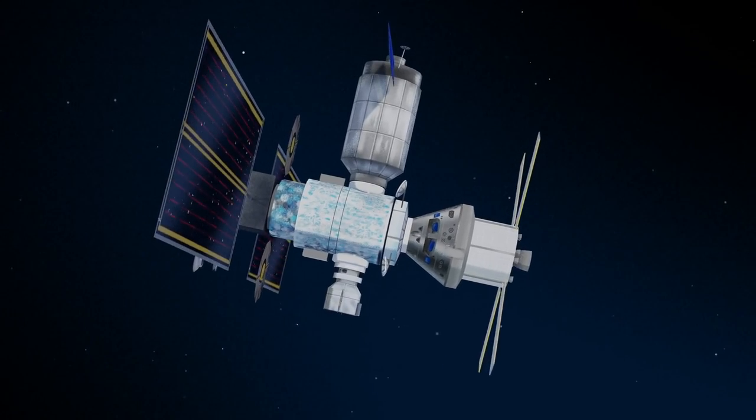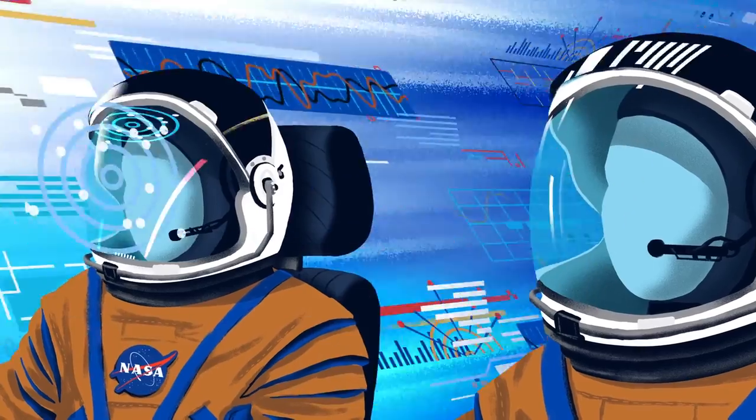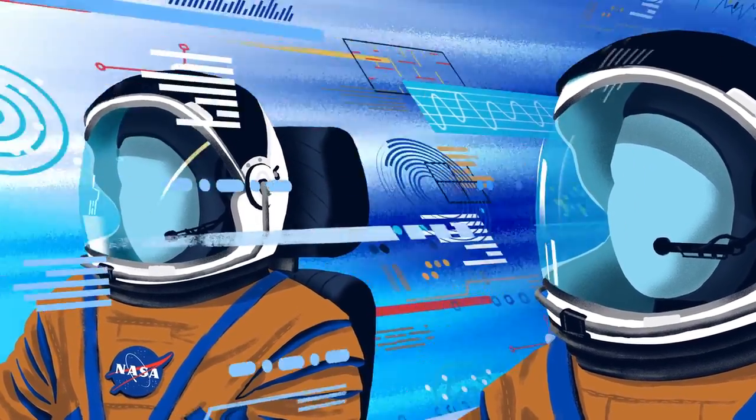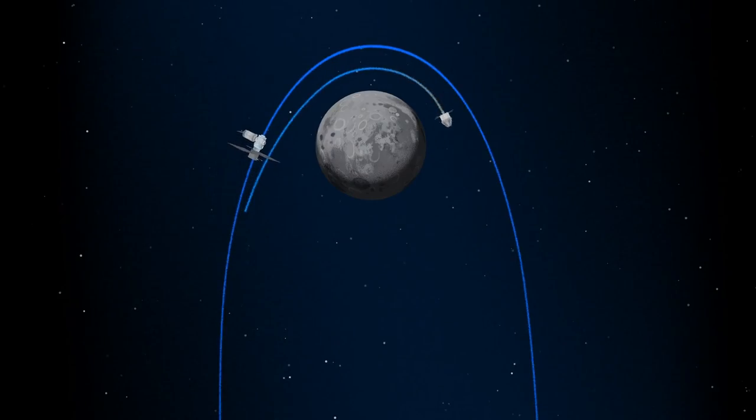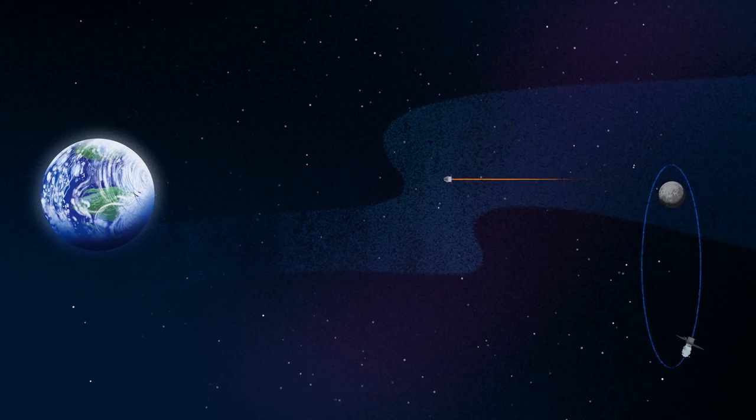Once back aboard the Orion spacecraft and undocked from Gateway, the crew fire their engine once to break out of the halo orbit, and once again to sling the spacecraft around the Moon, placing it on a multi-day trajectory back towards Earth.